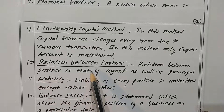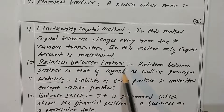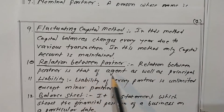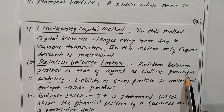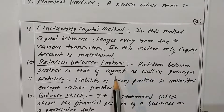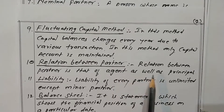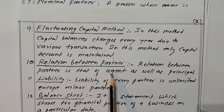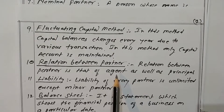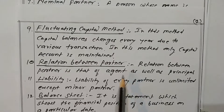What is the relation between partners? The relation between partners is that of agent as well as principal. Every partner is the agent of other partners and every partner is principal for others. For example, if A and B are partners, A is the agent of B and B is the agent of A; also A is the principal of B and B is the principal of A.